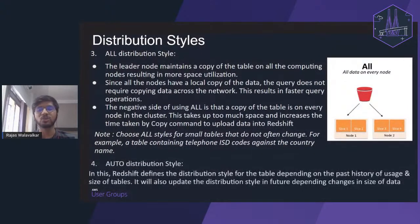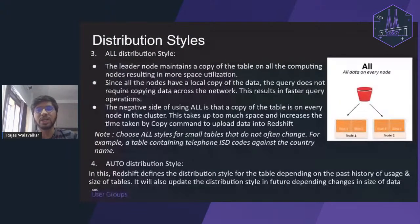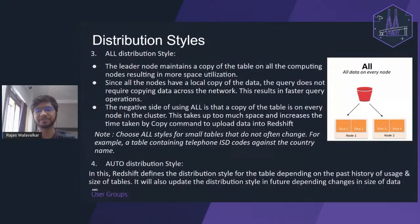The last and default distribution style is AUTO distribution. As the name suggests, Amazon Redshift will automatically define which distribution style to select for that table. Whenever you create a table without defining a distribution style, Redshift automatically assigns one. Based on query patterns, data history, and data size, Redshift decides which distribution style suits that particular table. If you are not familiar with these concepts and creating a simple table, Redshift's AUTO distribution will take care of everything automatically.